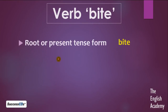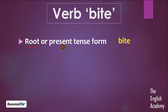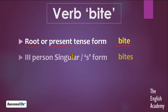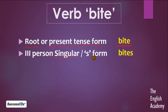Sabse pehli form hai root form, jise hum present tense form bhi kehte hain. Next is third person singular, yaa phir s-form. English mein jab bhi hum third person singular ke liye verb use karte hain, to hum uska s-form use karte hain — yane ke uske end par hum s add karte hain, and the verb becomes bites.